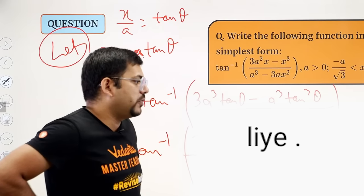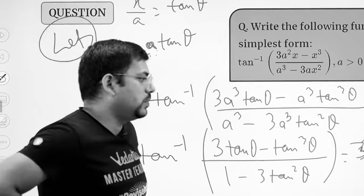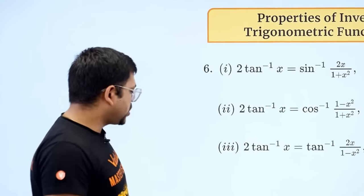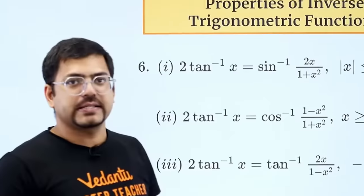There is only one thing for this - create related questions from the formula. The properties of inverse trigonometric functions are like 2 tan inverse x. So you can write sin inverse 2x upon 1 plus x square.